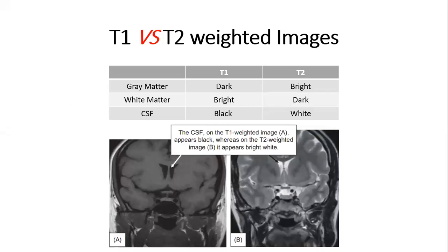First thing: how to differentiate between T1 and T2-weighted images? It is quite simple. The gray matter will be dark on the T1-weighted image, while it will be bright in the T2-weighted image. The white matter is inverted — it will be white in the T1-weighted image, while it will be dark in the T2-weighted image. The cerebrospinal fluid, like we see in these ventricles here, is dark in the T1-weighted image, while it is bright in the T2-weighted image.